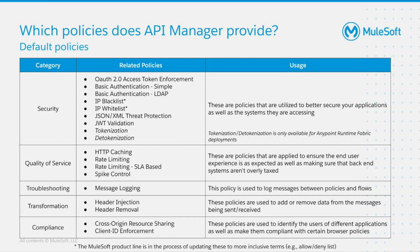The JWT validation policy allows you to validate the signature of a JSON Web Token and assert the values of the claims of incoming requests by using a JWT with JWS format. We also have tokenization and detokenization, where tokenization is the process of masking sensitive data into a token that can then be mapped back to its original value using detokenization concepts. So if your API contains sensitive data, the tokenization policy is a very effective way to protect it. Note that tokenization and detokenization is only available for runtime fabric deployments. I highly recommend you watch the Friends of Max video 'Securing Access to APIs with API Manager,' which goes into more detail on this category.